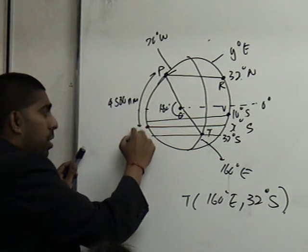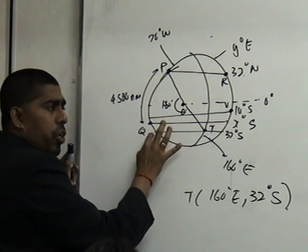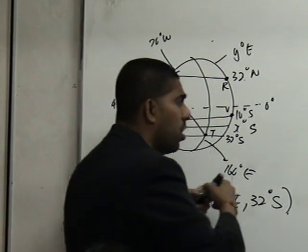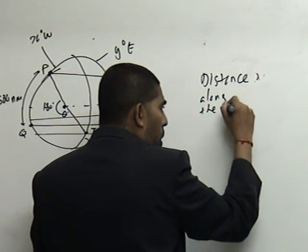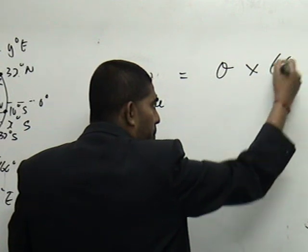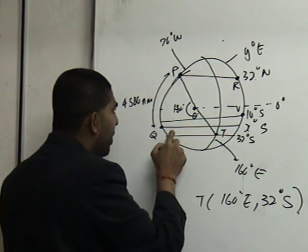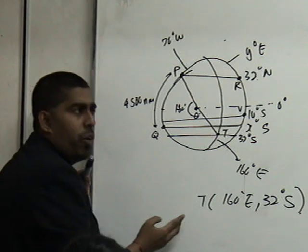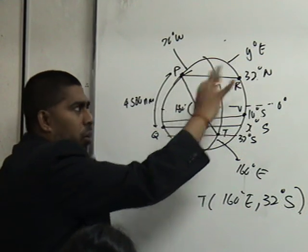Can you see that now, students? So, my point T would be. Always remember, when you want to write a point, which must come first, latitude or longitude first. So, what is my latitude? 32 degrees south. And, followed by what, students? 160 degrees east. That will be my point T. So far, so good. Are you okay, students? Alright? Okay. Next, please continue. B. Calculate. Number 1. The value of X if the distance from P to Q measured along the meridian is 4500 nautical miles.